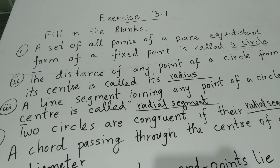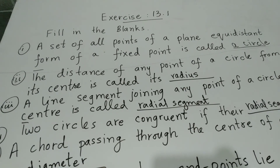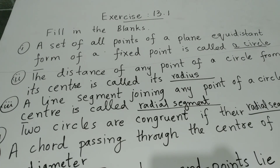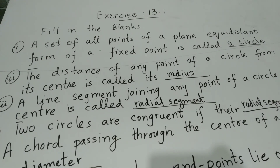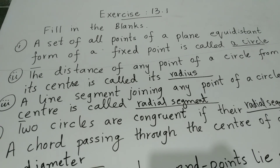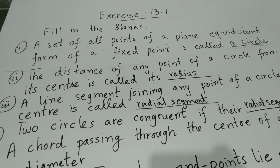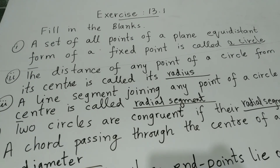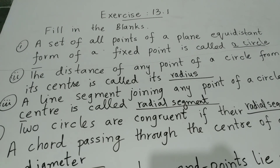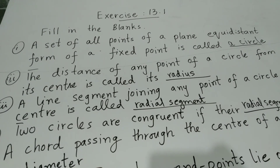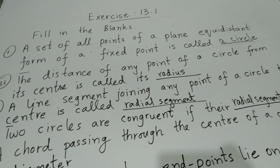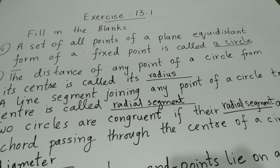Question number 6, part 1: A set of all points of a plane at equal distance from a fixed point is called a circle. Here I have mentioned the answers.